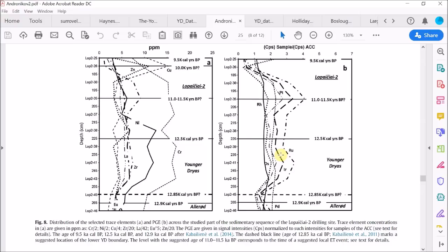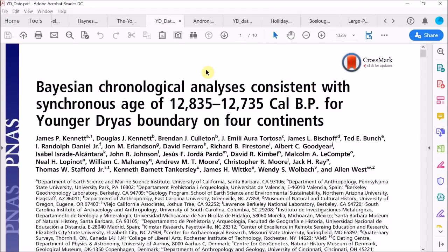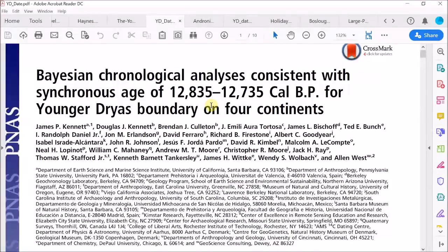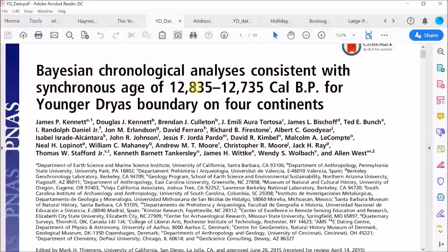So let's just move on to the next paper. Our next paper is another one from the Comet Research Group and here they're trying to refine the age estimate of the Younger Dryas impact event using all the available data from dozens of sites across four continents. And as you can see, they arrive at a date of 12,785 calendar years BP within 50 years at 95% confidence.